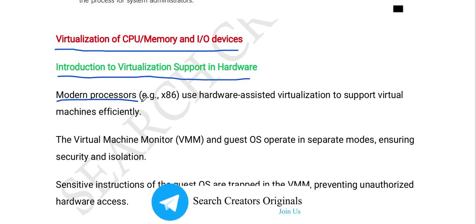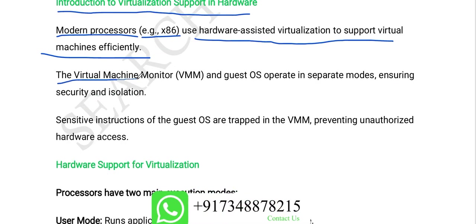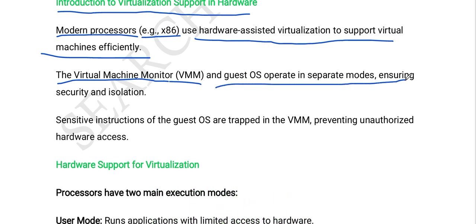Modern processors like x86 use hardware-assisted virtualization to support virtual machines efficiently. The virtual machine monitor (VMM) and guest operating system operate in separate modes, ensuring security and isolation.